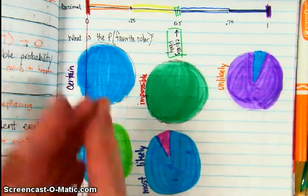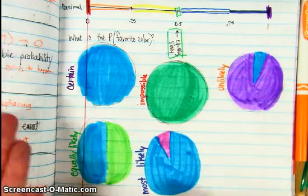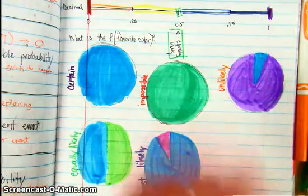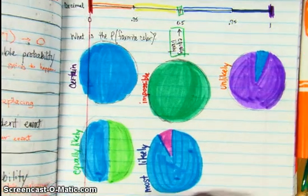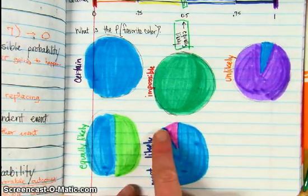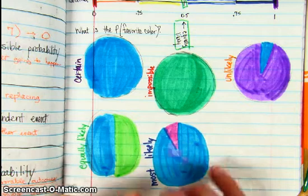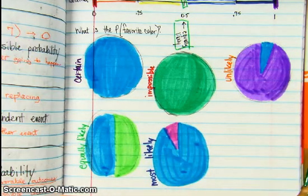Equally likely, it's 50-50, so half is battery charged blue, half is another color. Most likely, the majority of the circle is colored battery charged blue, and then we've got a little piece of another color.